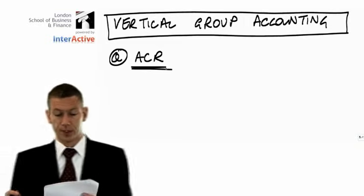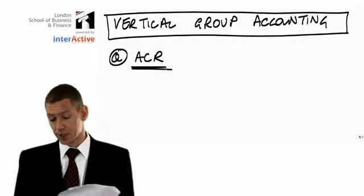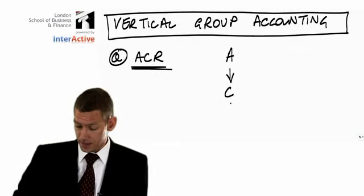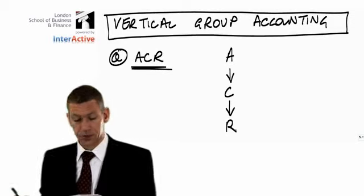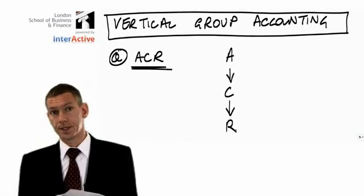These baby questions just get you going with minority interest, which is really the key to this subject. A buys C, and C buys R. Let's get the relationships, the ownership percentages between these entities.